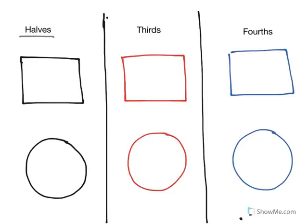We're going to start by breaking this rectangle and this circle into halves. When we break a shape into halves, what we're trying to do is create two equal pieces.